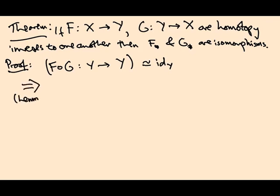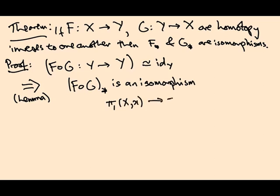Because this is homotopic to the identity, the lemma that we just proved implies that (f∘g)_star is an isomorphism from π₁(Y,y) to π₁(Y,f(g(y))). But (f∘g)_star equals f_star∘g_star—this is the functoriality of the push forward map.